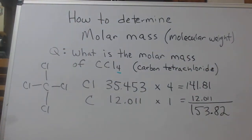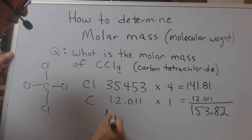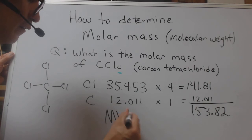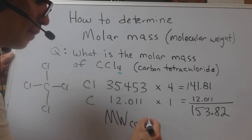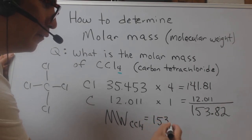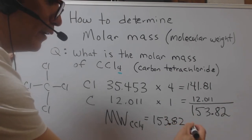What does that number mean to us? Well, that's our molecular weight for this particular substance. Molecular weight of carbon tetrachloride is 153.82 grams.